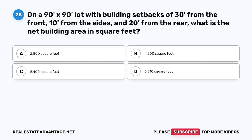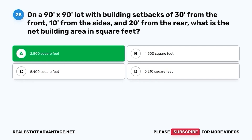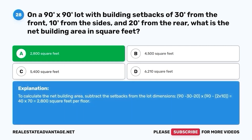Question 28. On a 90-feet-by-90-feet lot, with building setbacks of 30 feet from the front, 10 feet from the sides, and 20 feet from the rear, what is the net building area in square feet? A. 2,800 square feet. B. 4,500 square feet. C. 5,400 square feet. D. 6,210 square feet. The correct answer is A. 2,800 square feet. To calculate the net building area, subtract the setbacks from the lot dimensions: (90 − 30 − 20) × (90 − 2×10) = 40 × 70 = 2,800 square feet.